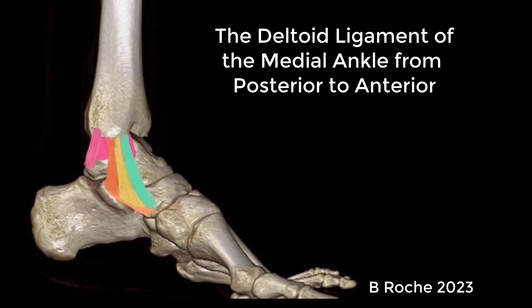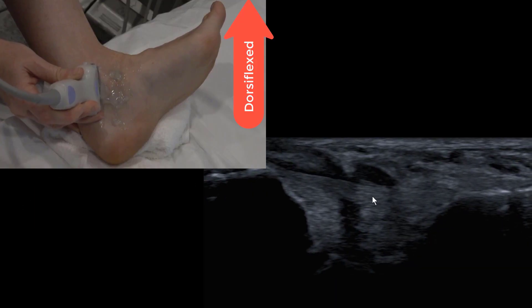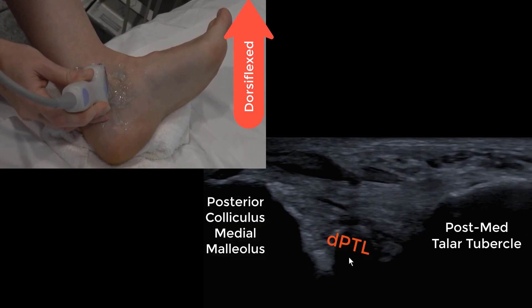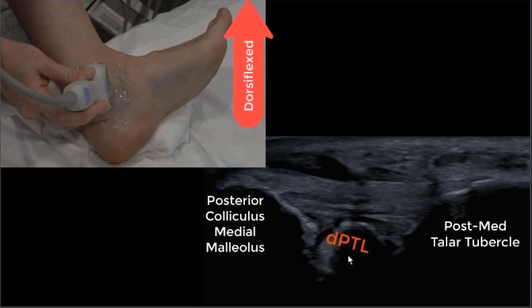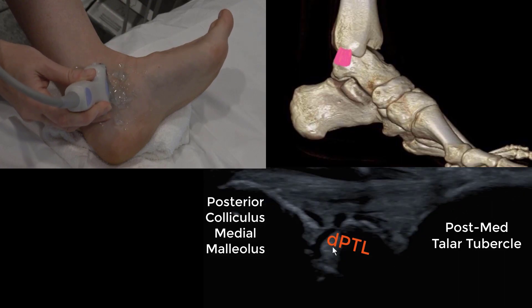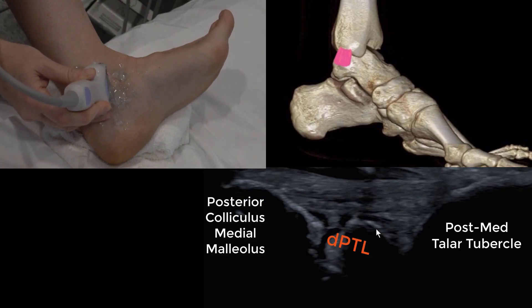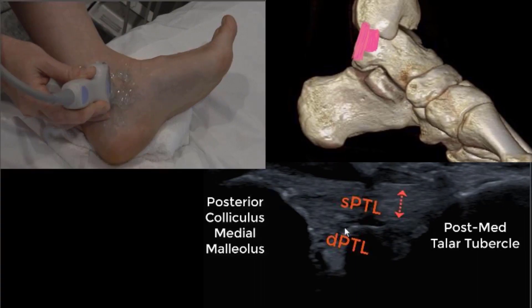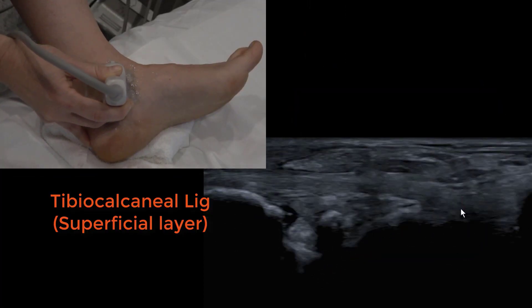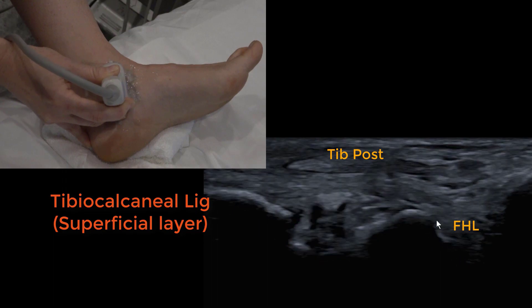Let's look at the deltoid ligament with ultrasound. The posterior aspect is best seen dorsiflexed. We have our probe on a diagonal from posterior colliculus to the centre point of the heel. The deep posterior tibiotalar ligament is occupied by a bony ossicle here. There may or may not be a superficial posterior tibiotalar ligament over the top, but you can see the talus clearly on the right hand side of the image.